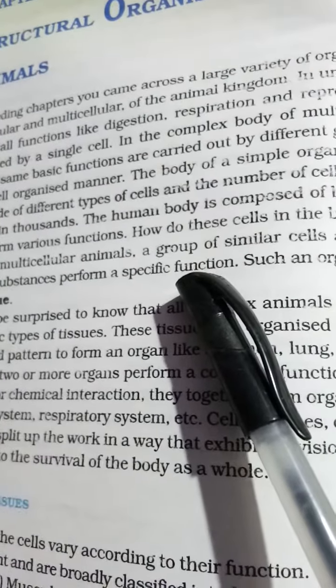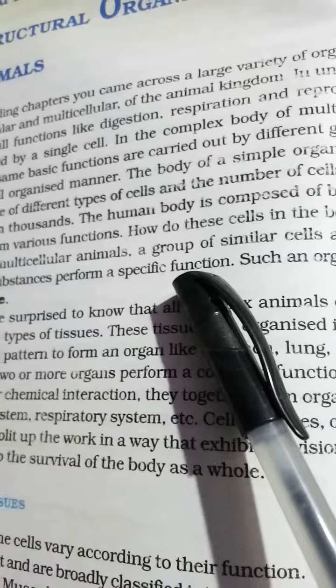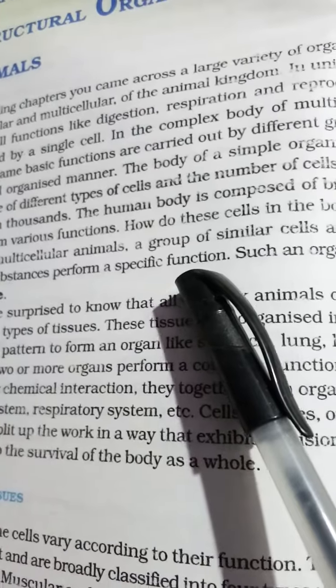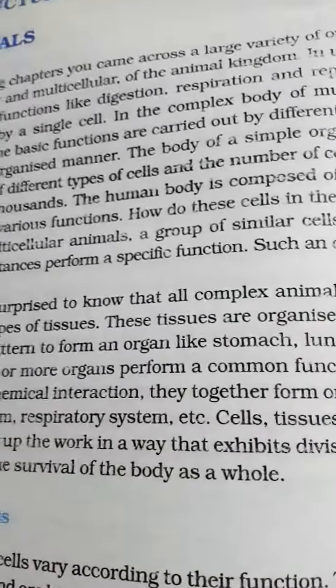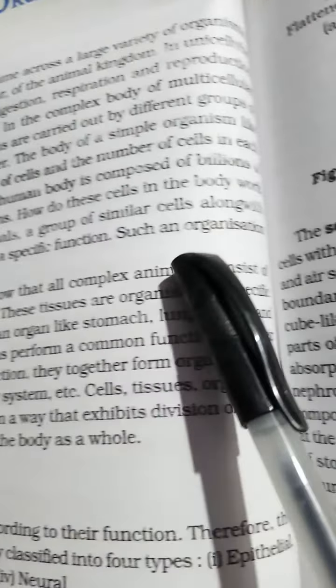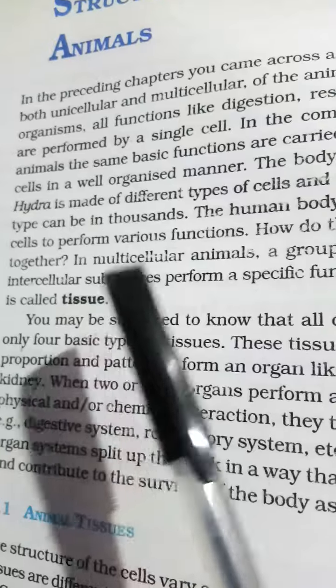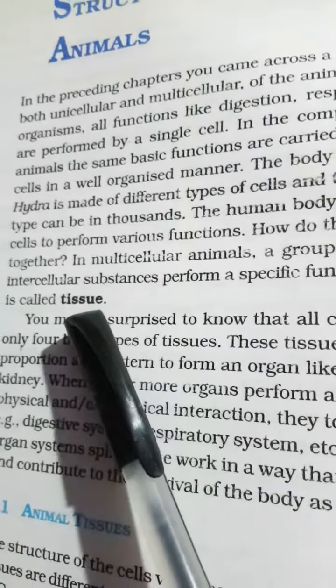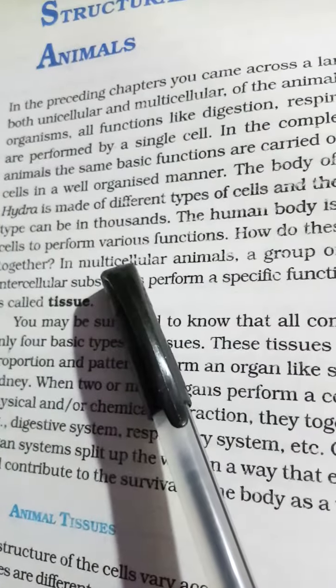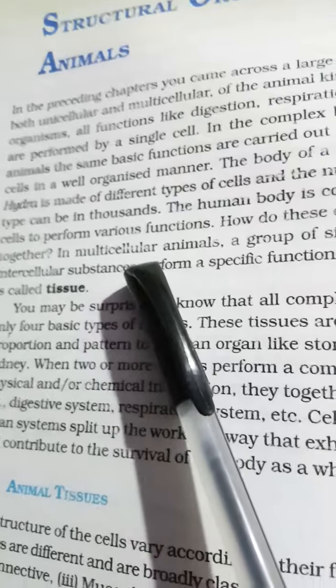A specific function is being performed in animal cells. In multicellular animal cells, such an organization is called a tissue. So cells, and then tissue - cells are the smallest unit.